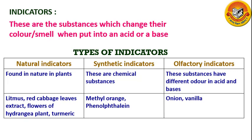Natural indicators, as their name suggests, are indicators found in nature in plants. Litmus, red cabbage leaves extract, flower of hydrangea plant, turmeric, etc. are examples of natural indicators.